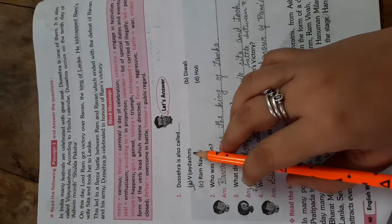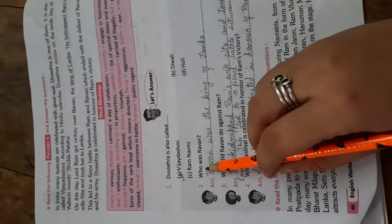The other name of Dashera is Vijay Dashmi. Now click on Vijay Dashmi. Write here A.